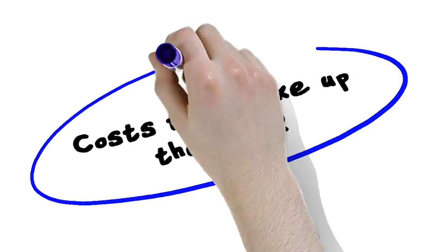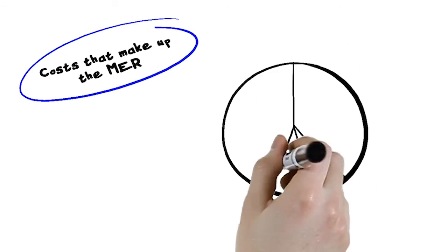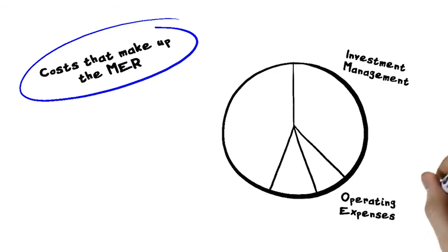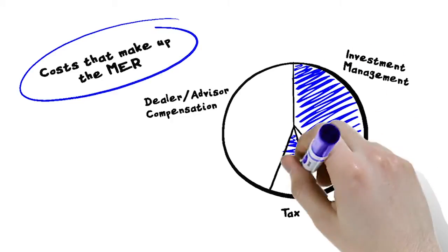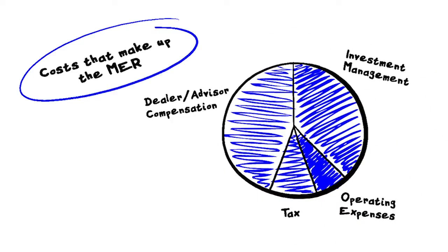The types of costs that make up the MER include investment management, operating expenses, tax, and compensation to the mutual fund dealer and your advisor for the ongoing services and financial advice they provide to you.